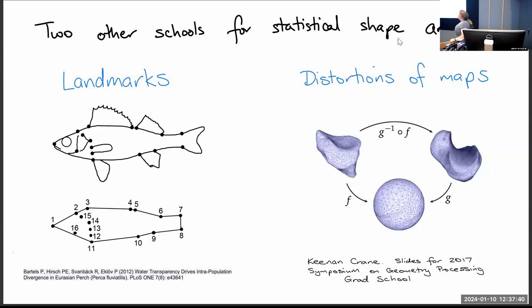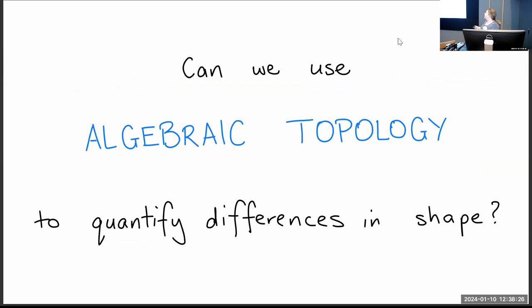Another school of thought is to think about distortions of maps. You have two different objects, map them both to a sphere, and compare how much surface area is distorted moving from one to the other. These are the two main other schools of shape comparison. The first loses a lot of information; the second is computationally intensive and it's unclear whether you're capturing what you want.